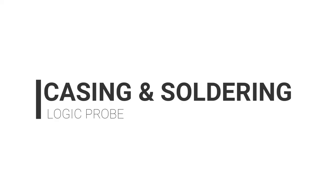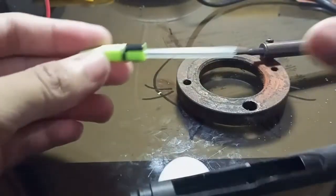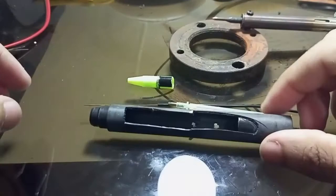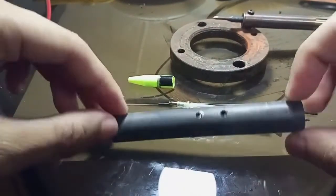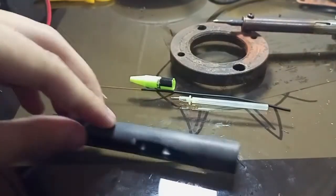For the casing, I used a marker which I hollowed out and cut off the tip. Since the tip of the probe will be needle-like, I sawed off the tip of an unused ball pen in which I inserted a solid wire for the probe tip. I also drilled two holes for the LEDs and one at the top where the connecting wires come out.